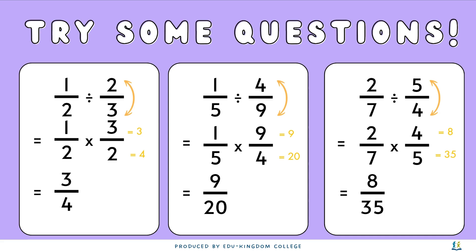The middle question: flipping 4 over 9 gives us 1 over 5 times 9 over 4, which gives 9 over 20 — also no simplification needed. The last question on the right: 2 over 7 divided by 5 over 4. Flipping 5 over 4 gives us 2 over 7 times 4 over 5. That gives 2 times 4 equals 8 and 7 times 5 equals 35, so the final answer is 8 over 35.